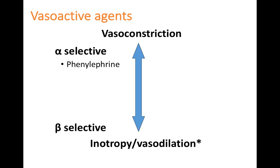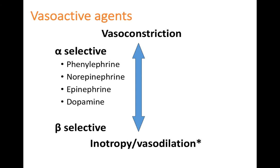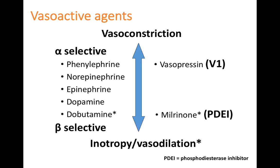Phenylephrine is a pure alpha agent, so think of it as causing vasoconstriction. Norepinephrine, epinephrine, and dopamine have mixed alpha and beta activity to different degrees, giving them some vasoconstriction and some inotropic effects. Dobutamine is more of a pure beta-selective agent — primarily beta-1 with some beta-2 — so its primary effects are inotropy and vasodilation. Vasopressin acts via V1 receptors with a net effect of vasoconstriction similar to the alpha agents. Milrinone causes inotropy and vasodilation similar to dobutamine, but as a phosphodiesterase inhibitor.